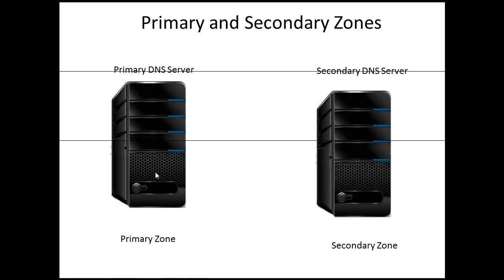For example, if a record were added to the primary DNS server, that record would be updated in that DNS database. Not so with the secondary DNS server — that database file would have to be pushed over to the secondary DNS server. We do have a push-pull method: the data can be pushed to the secondary DNS server, or the secondary DNS server can pull that DNS data. But remember that the secondary DNS server does not update information automatically; that only happens on the primary DNS server.